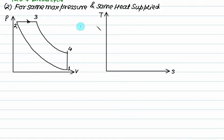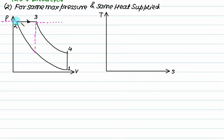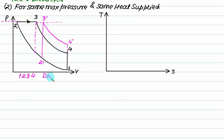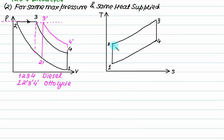The second comparison criterion is same maximum pressure and same heat supply. On the P-V diagram, one-two-three-four represents the Diesel cycle and one-two dash-three dash-four dash represents the Otto cycle. At the same maximum pressure, the compression ratio of the Otto cycle is higher than that of the Diesel cycle, so the temperature attained at the end of compression for the Otto cycle is higher, and point two dash is located at a higher temperature.